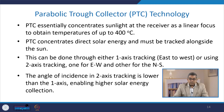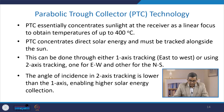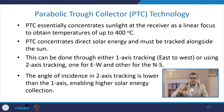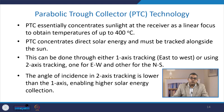The first is the parabolic trough collectors technology, PTC. The PTC essentially concentrates sunlight at the receiver as a linear focus to obtain a temperature up to 400 degree Celsius. It concentrates direct solar energy and must be tracked alongside the sun. This can be done through either one-axis tracking east to west, or using two-axis tracking — one for east to west and the other from north to south. The angle of incidence in two-axis tracking is lower than one-axis, enabling higher solar energy concentration.